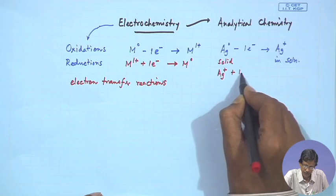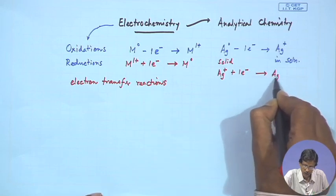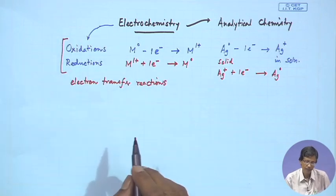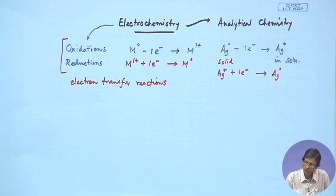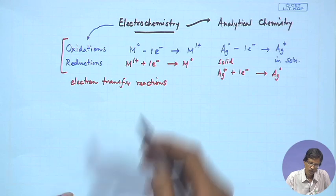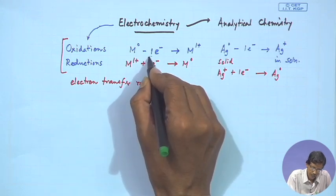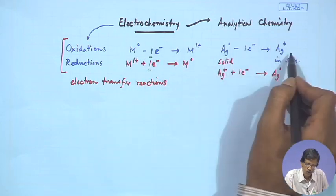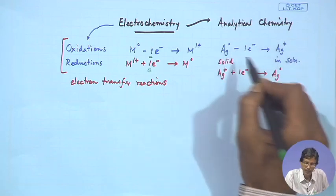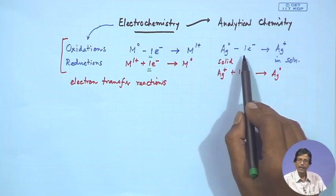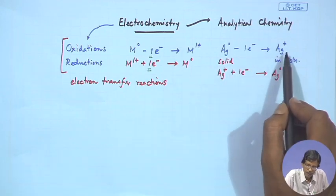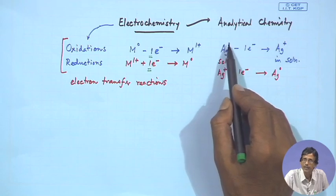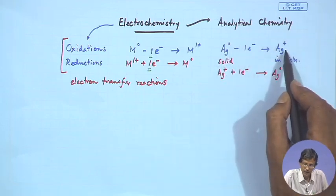The silver ion can accept one electron to give silver 0. These electron transfer reactions for oxidation and reduction can be studied very nicely — particularly, we are interested to know the corresponding number of electrons involved in a given electron transfer reaction. These two species are chemical species related by either one electron gain or one electron loss, corresponding to oxidation states 0 and 1+.